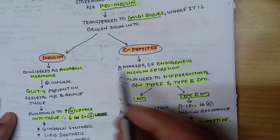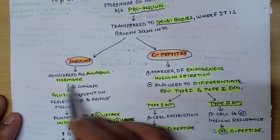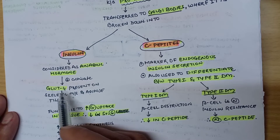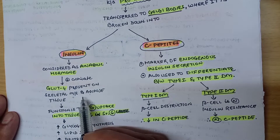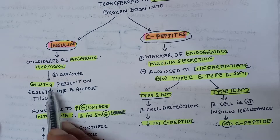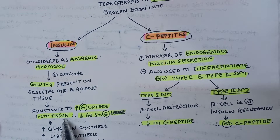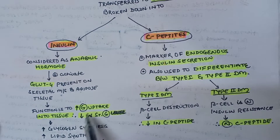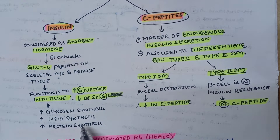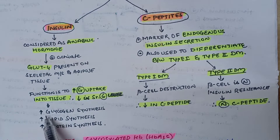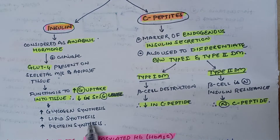Insulin is considered an anabolic hormone because it activates the GLUT4 receptor. GLUT4 is the glucose transporter 4 receptor, present on skeletal muscles and adipose tissue. Its main function is to increase glucose uptake into the tissue, thereby decreasing serum glucose level, causing increased glycogen synthesis, increased lipid synthesis, and increased protein synthesis.